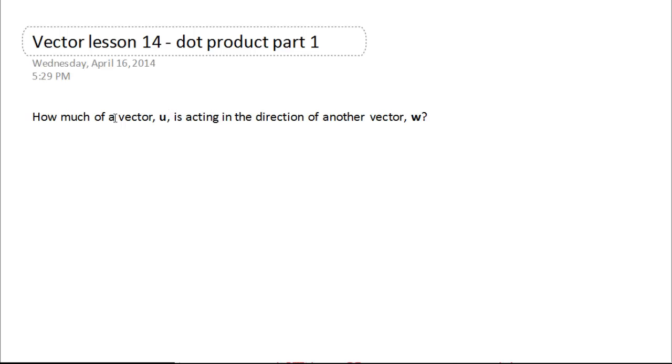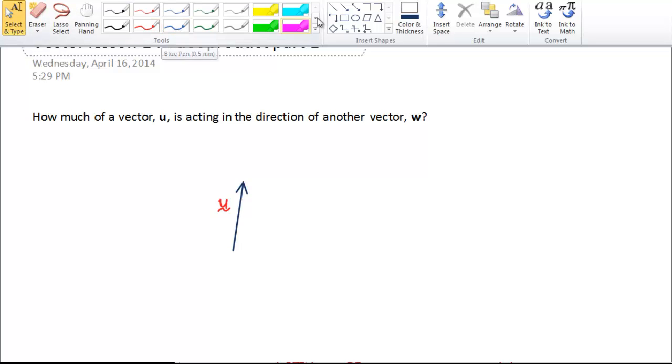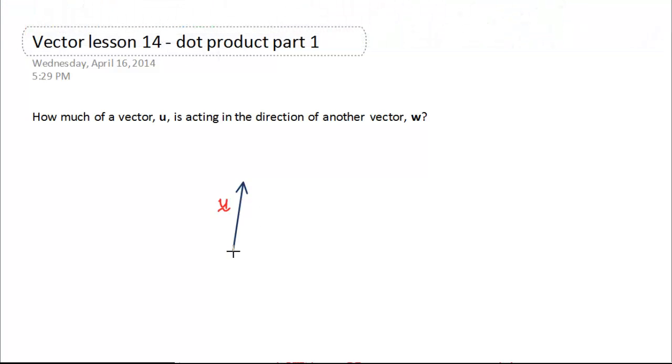So my first question is, if we have a vector u, I'm just going to draw a random vector here, and let's call this vector u, and I have another vector called w, and let's draw it. So, these vectors have the same origin. Now, what I want to know is, how much of this vector u is acting in the direction of vector w.